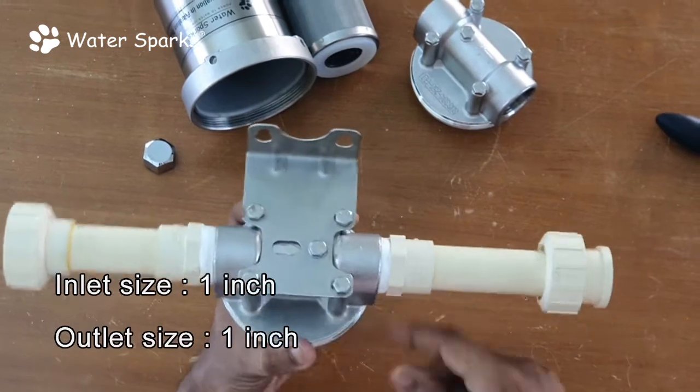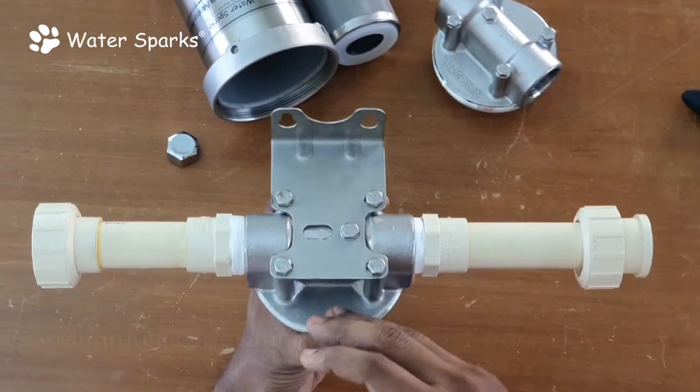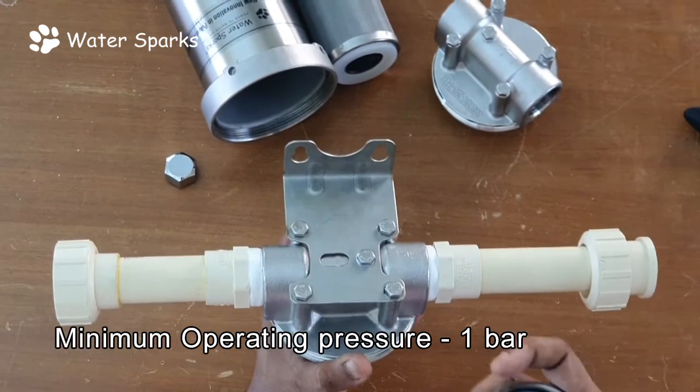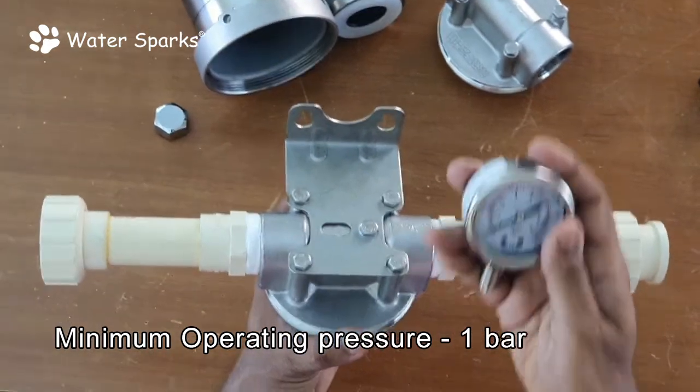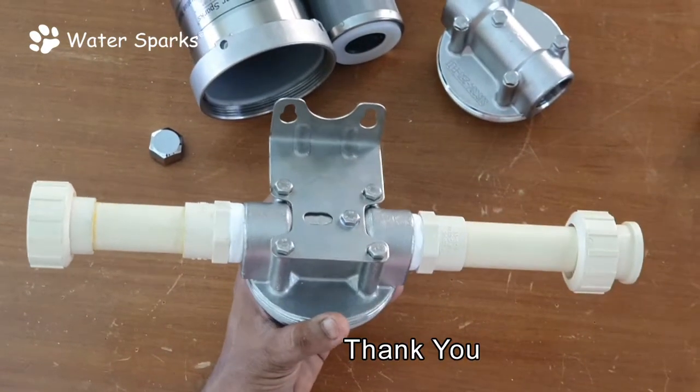There's a nut here, so when the water pressure increases and dust gets accumulated in the filter, the pressure goes up. You'll know what amount of pressure is there. You can fix a pressure gauge by removing this nut here. Thank you.